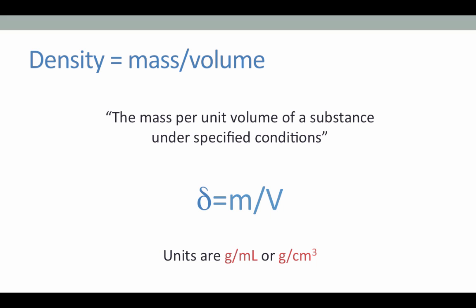Now that we're familiar with the balances and glassware that can be used for determining mass and volume, we can discuss the calculation of density, which is defined as the mass per unit volume of a substance under specified conditions. The equation for density is thus lowercase delta for density equals m for mass divided by v for volume. Given this equation, it's fairly clear that the units are going to be mass units over volume units, so density is usually recorded in terms of grams per milliliter or grams per centimeter cubed.